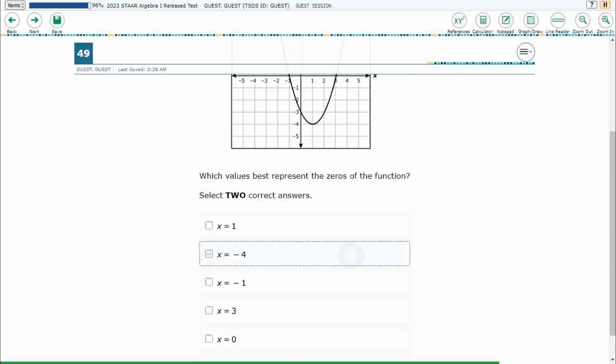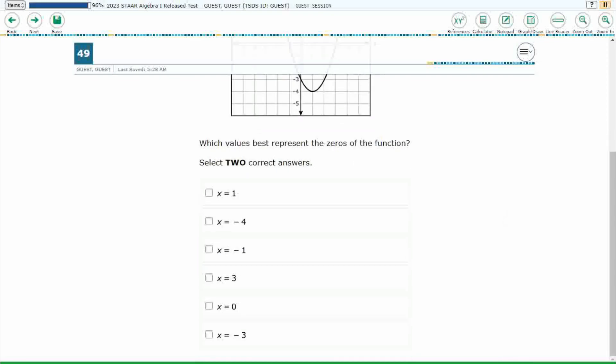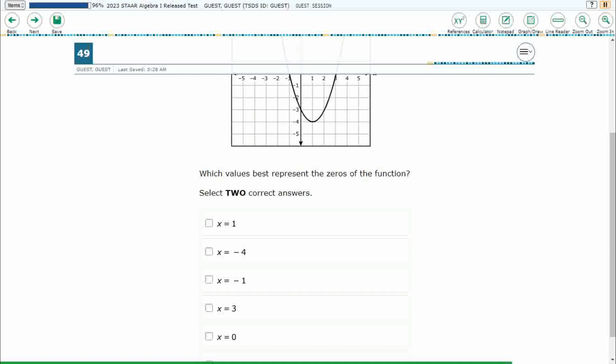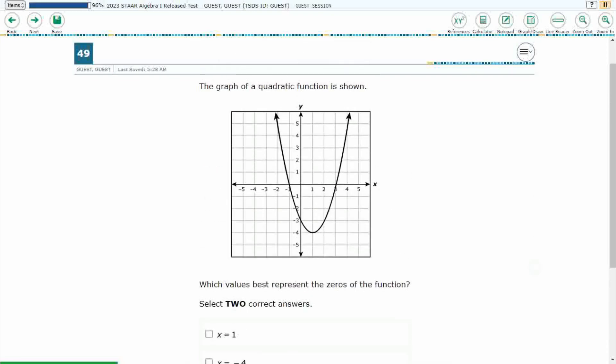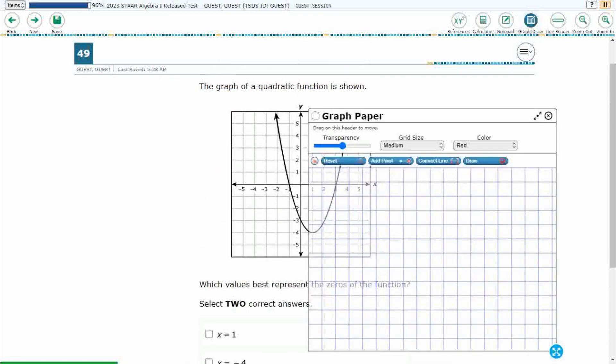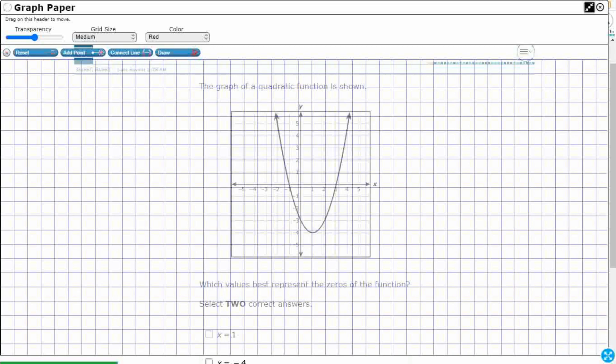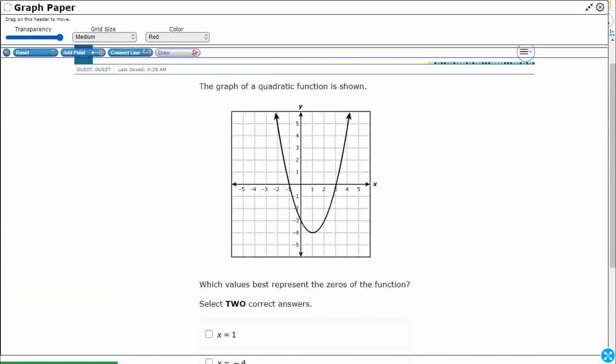So we want to make sure we answer correctly with two correct answers, and we are looking for zeros. The only clue that we get in this particular problem is that word zeros, and unfortunately there is not much context there. There is nothing on your reference materials that refer to zeros, and the number zero didn't even show up. Maybe it's the origin? That is not really what we are talking about.